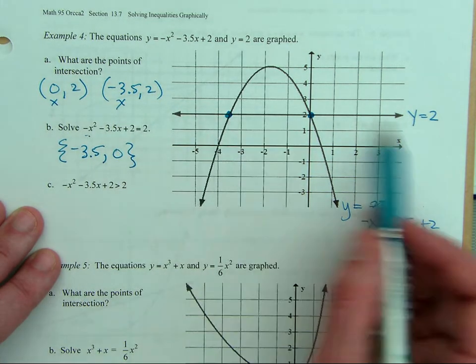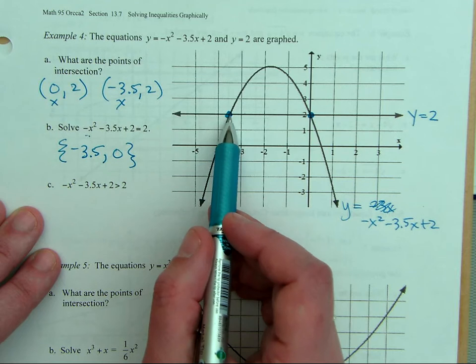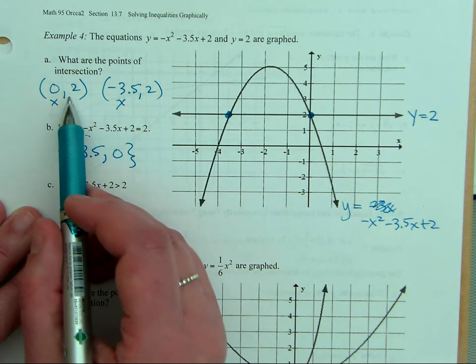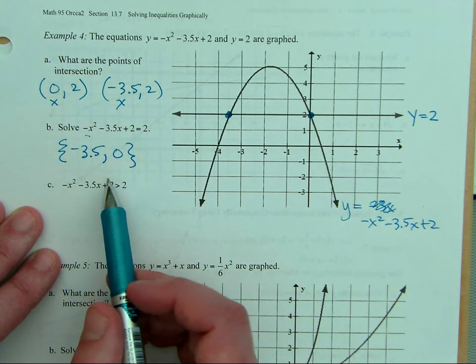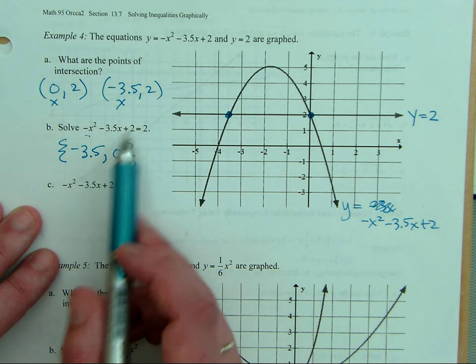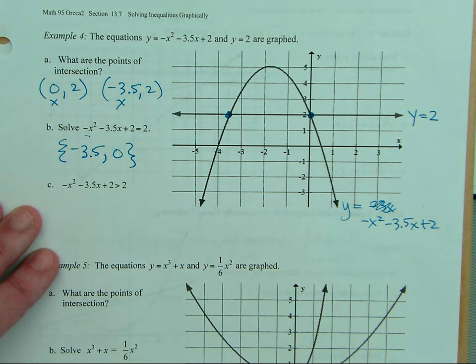Y equals 2 is that line, and that's why the points are the ordered pair, but the solution is just the x values. Because if you were to plug in these x values one at a time, you should get y equals 2.